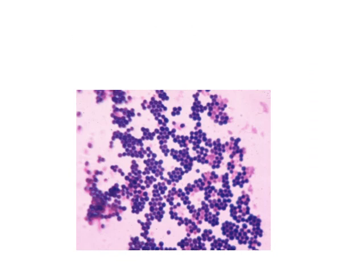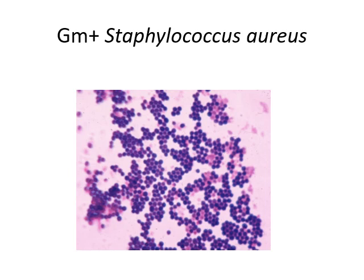These are cocci bundled together like grapes, dark purple — so gram positive cocci. You should recognize this one on sight by now: this is Staphylococcus aureus, an opportunistic pathogen that's part of the normal skin microbiome, and a pyogenic bacterium.